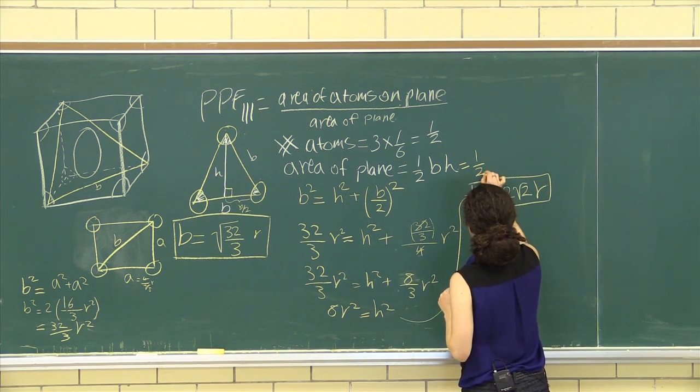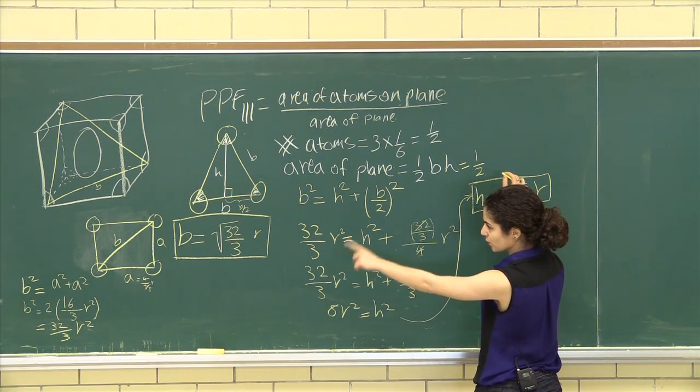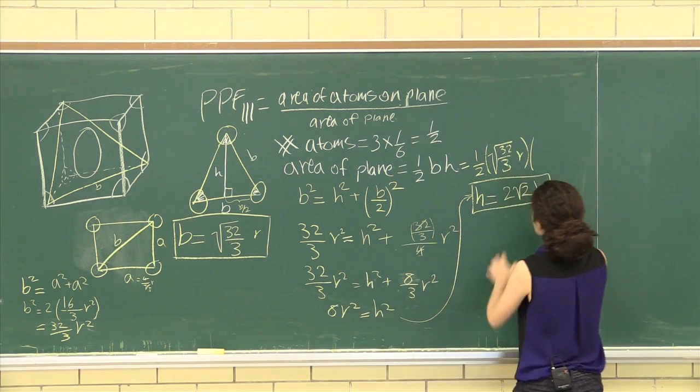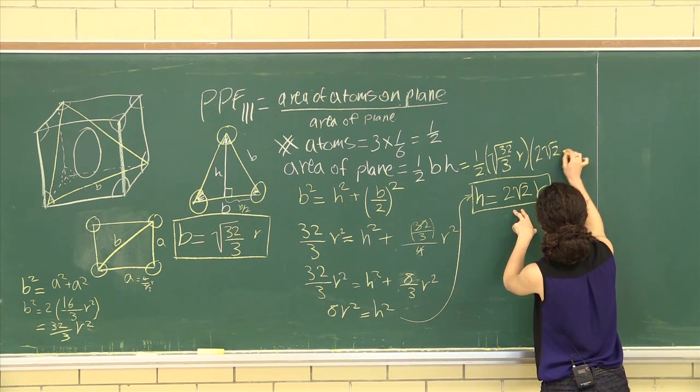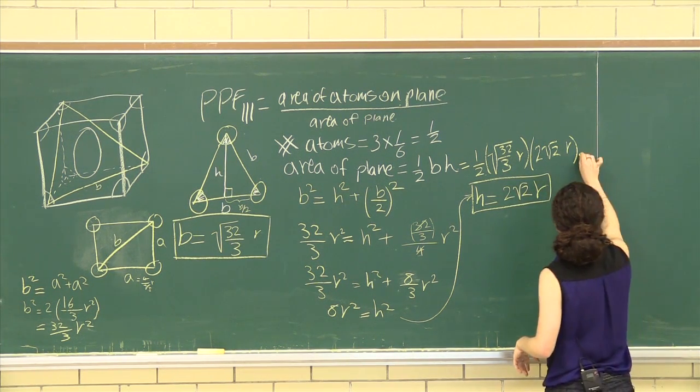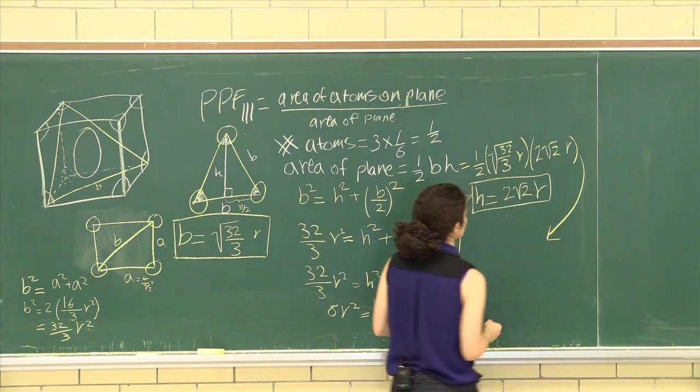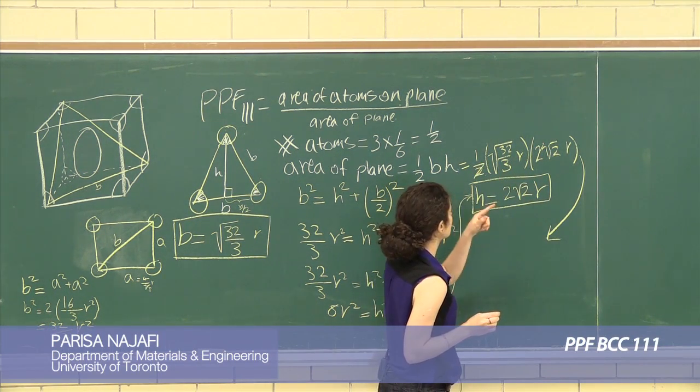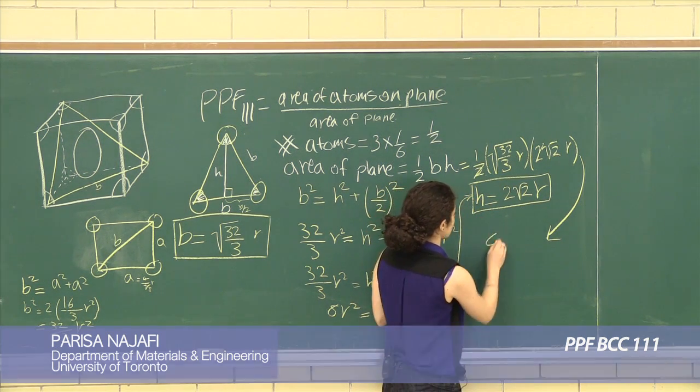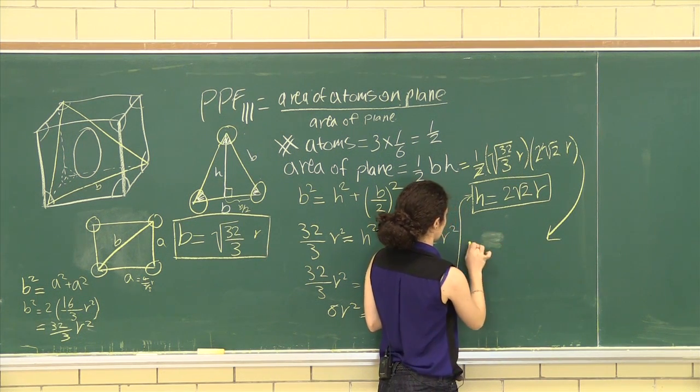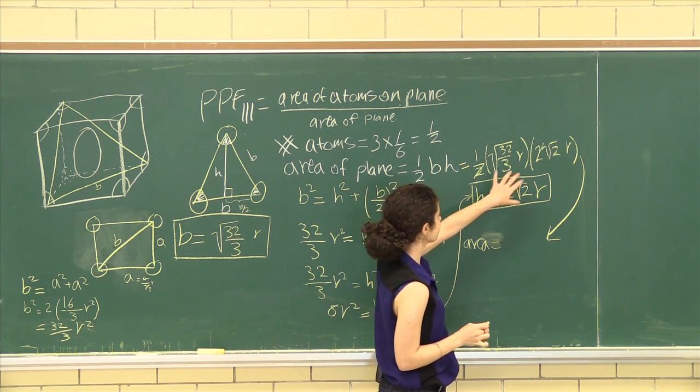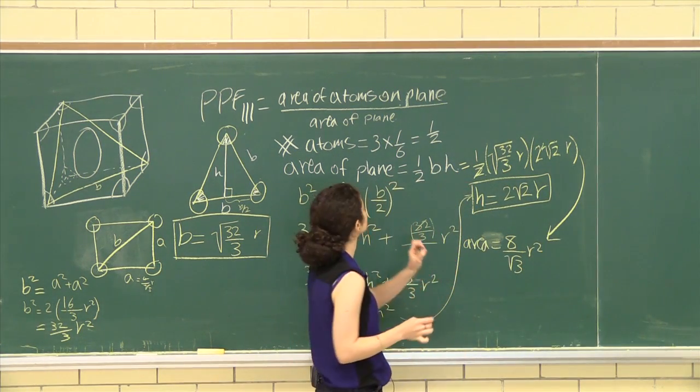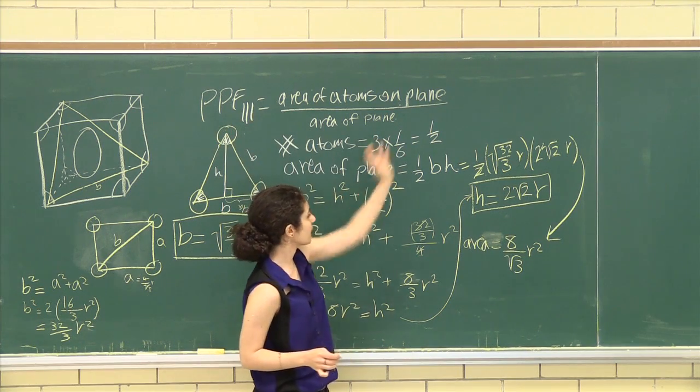So we have half our B, which is root 32 over 3, R times 2 root 2, R. And so let's solve for this. So 2 goes out. 32 times 2, 64, root 64 is 8. Area is equal to 8 all over root 3, R squared. Perfect. We have our area of the plane.